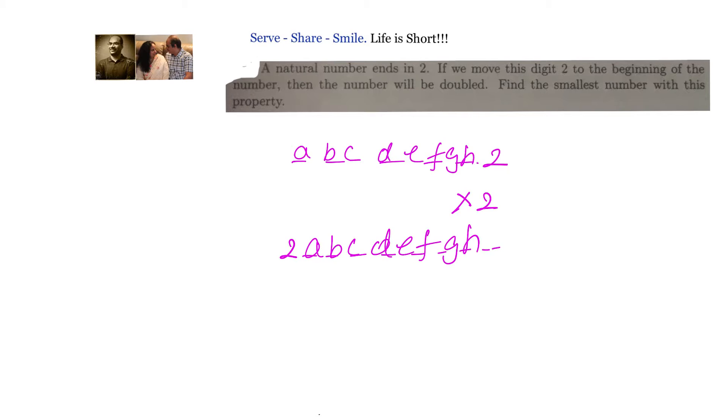To find it out, I made two simple observations. If you're multiplying any number with 2, then there should be a 4 here. And any number you're multiplying with 2 and getting 2, this should be 1. So the number should look like 1, some digits, then 4, 2. When I multiply, the number will become 2, 1, and end up with 4.